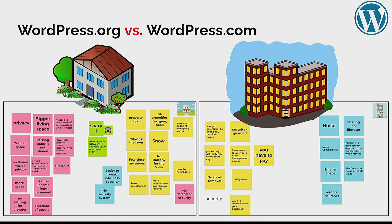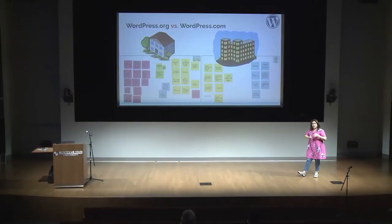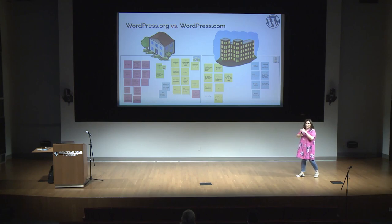The advantage of WordPress.com in the classroom is we don't need to worry about hosting or pay for it. The advantage of .org is all the scalability, plugins, and fun things that come with it. Typically in a class of 40, I find 30 would choose .com and 10 would choose .org. But eventually some of the .com students convert because they look at everything else that happens in the house — the swimming pool and all the things they can do.